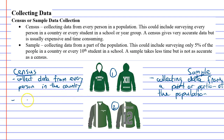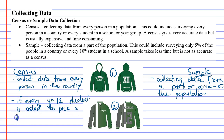Now if every year 12 student is asked to pick a jumper, that's called a census. The reason for that is that these jumpers only involve the year 12 students — they're the only ones wearing it, so they're the only ones that need to be interviewed about this. If all of them are interviewed and asked which jumper they want, then a census has occurred. Whereas if it was a sample, maybe every fifth student was asked.